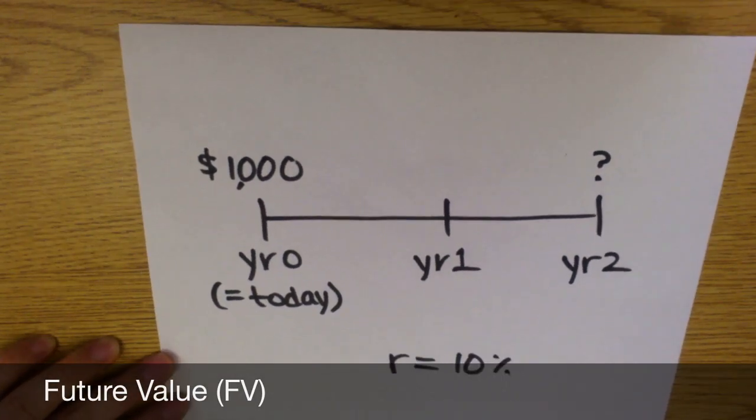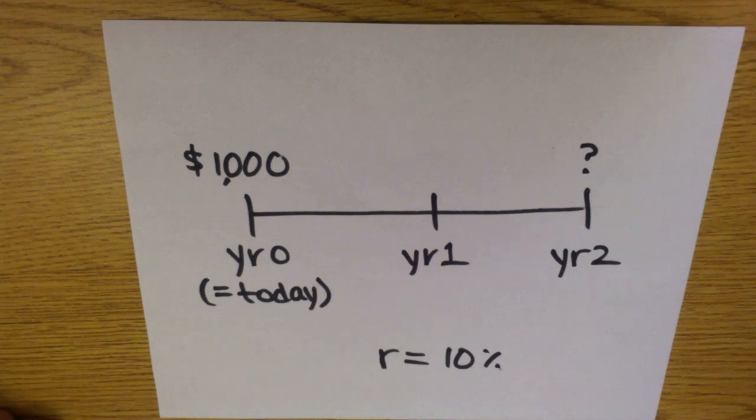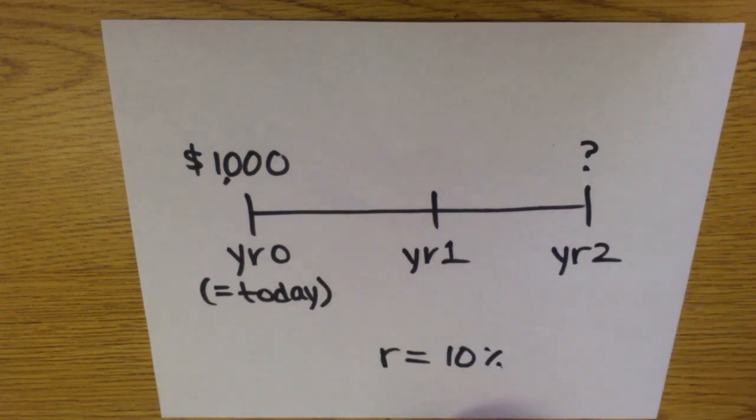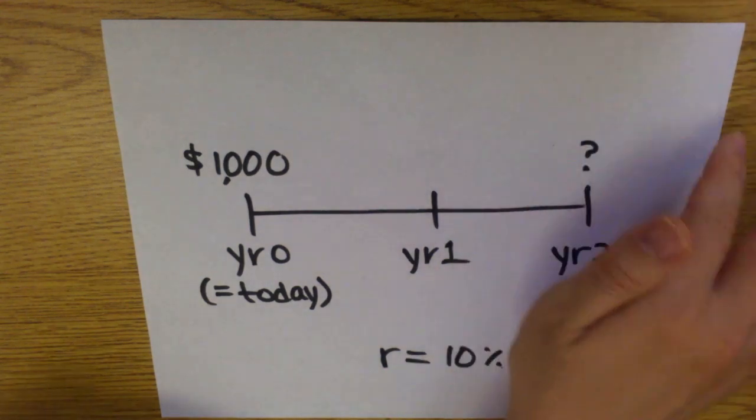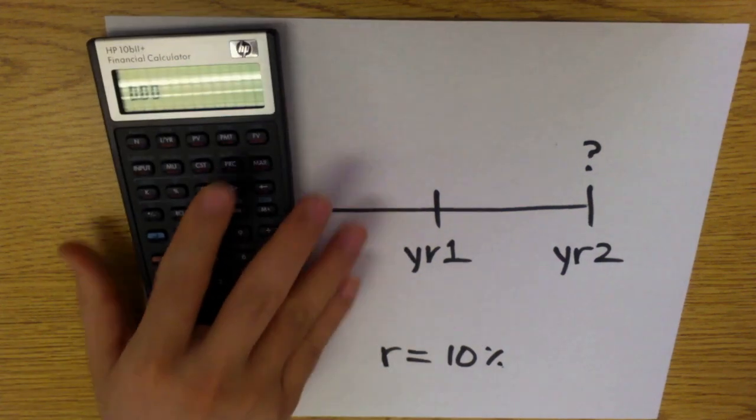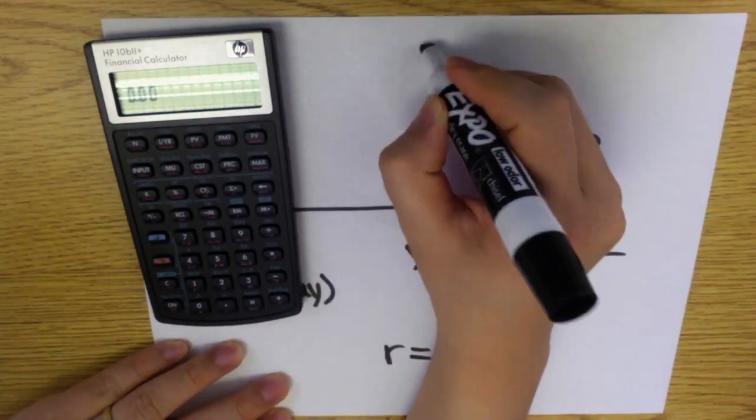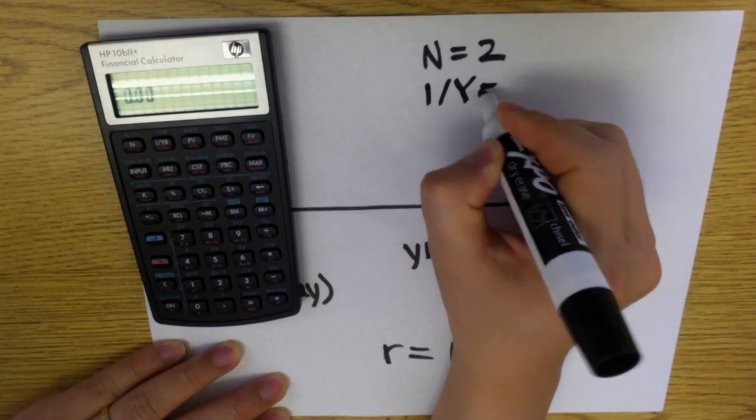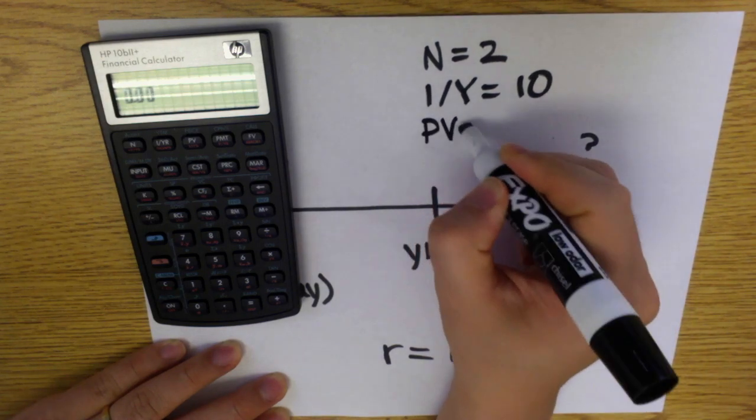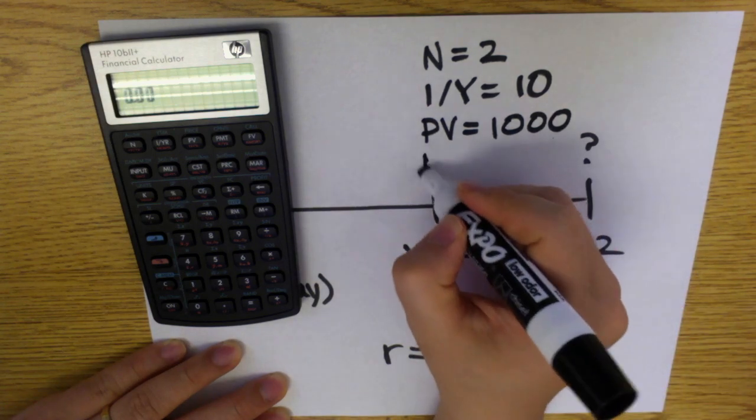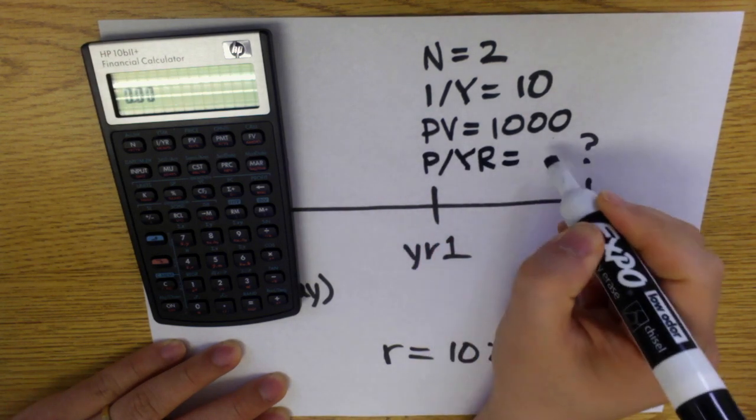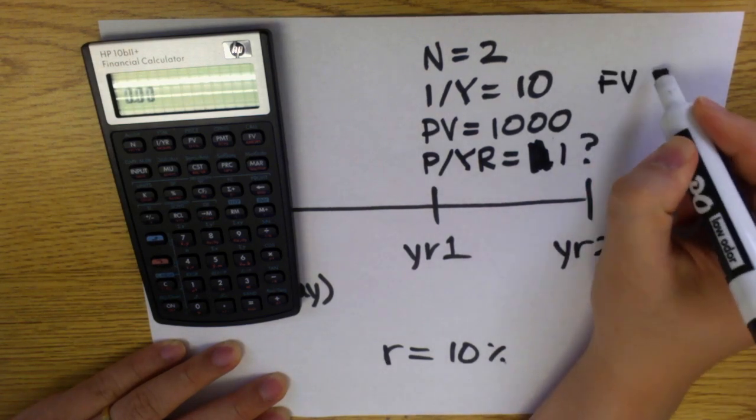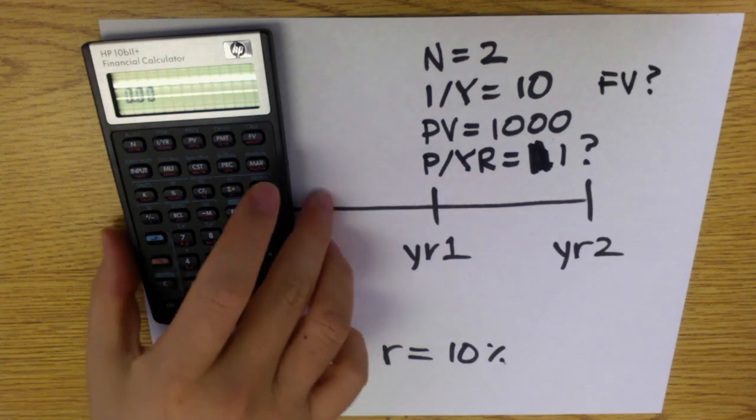There's a thousand dollars on your hand right now and you want to deposit it and get interest. There's an annual payment of interest, one per year, and then the interest rate is ten percent per year. So what is the future value? From the calculator we know that N equals two because we're getting paid twice, and interest per year is ten percent. Present value equals one thousand, and payment per year equals one.